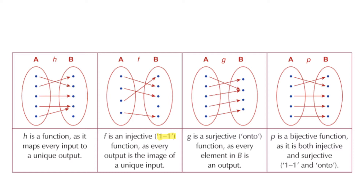If a graph does not have a unique output for every input, then it is not a function. We're going to look at other ways to identify a function, but that's the starting point.